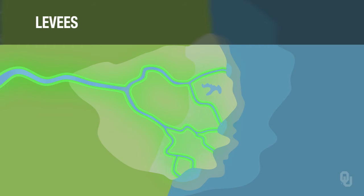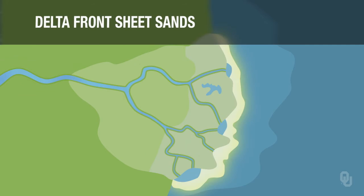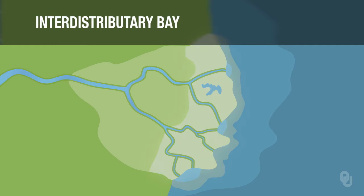There are levees at the edges of the distributary channels, which are produced by flooding and are little mounds that make the river channel bigger. There are delta-front sheet sands, which are caused principally by waves, which distribute the sand that has been delivered to the DMB. There's also the inter-distributary bay between the distributary channels, which includes things like swamps and large lakes.